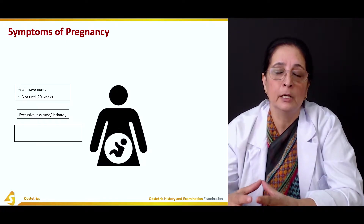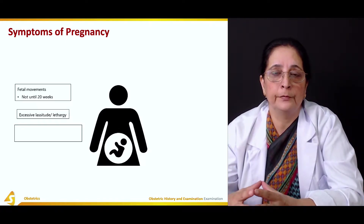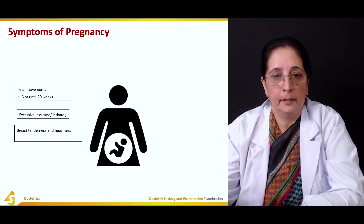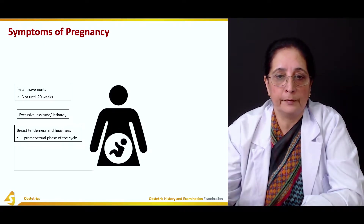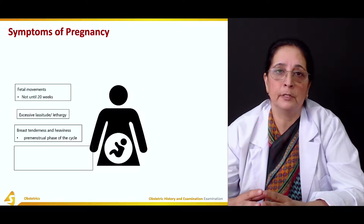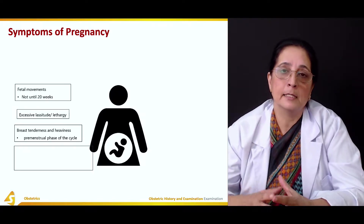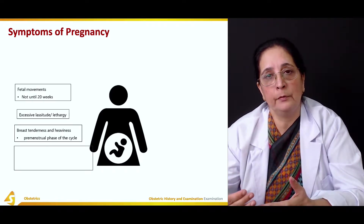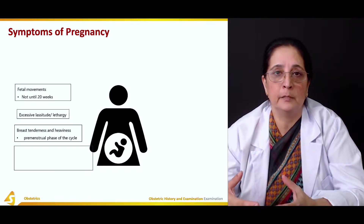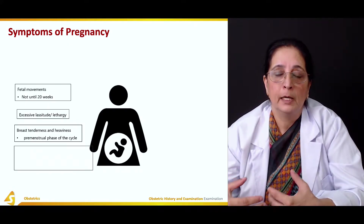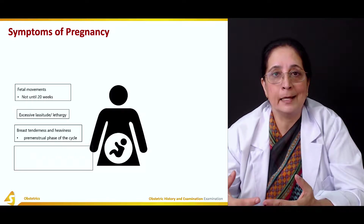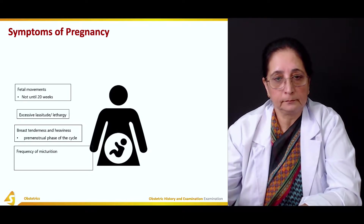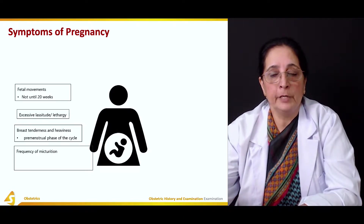Lassitude and lethargy usually occur in the first trimester of pregnancy, the first three months. There is also breast tenderness and heaviness, which are the same changes that occur in the pre-menstrual phase — usually three to four days before the onset of menstruation — because of hormonal changes.